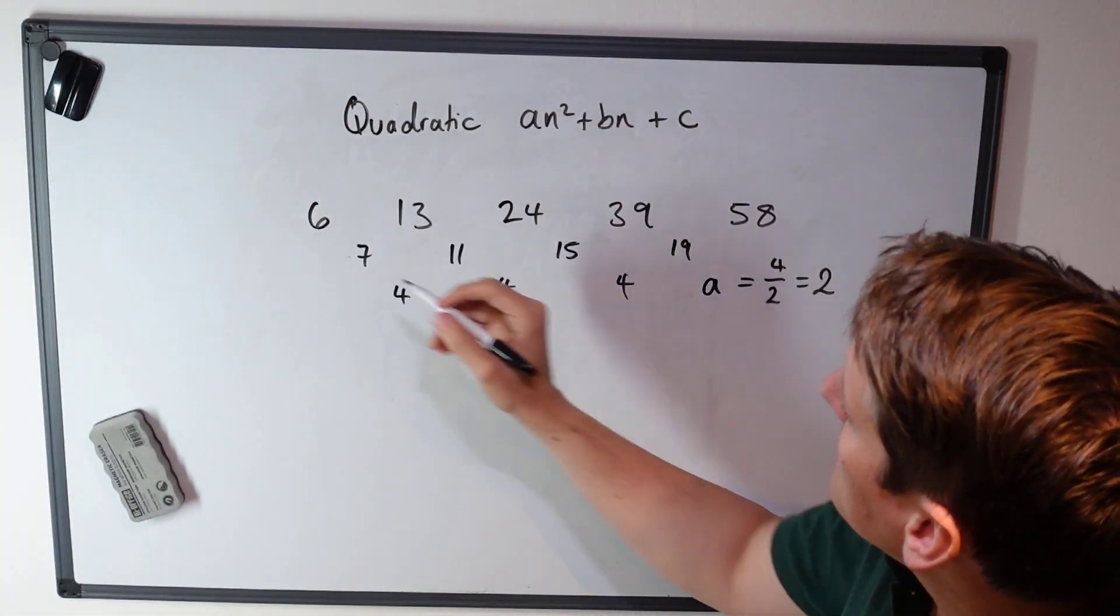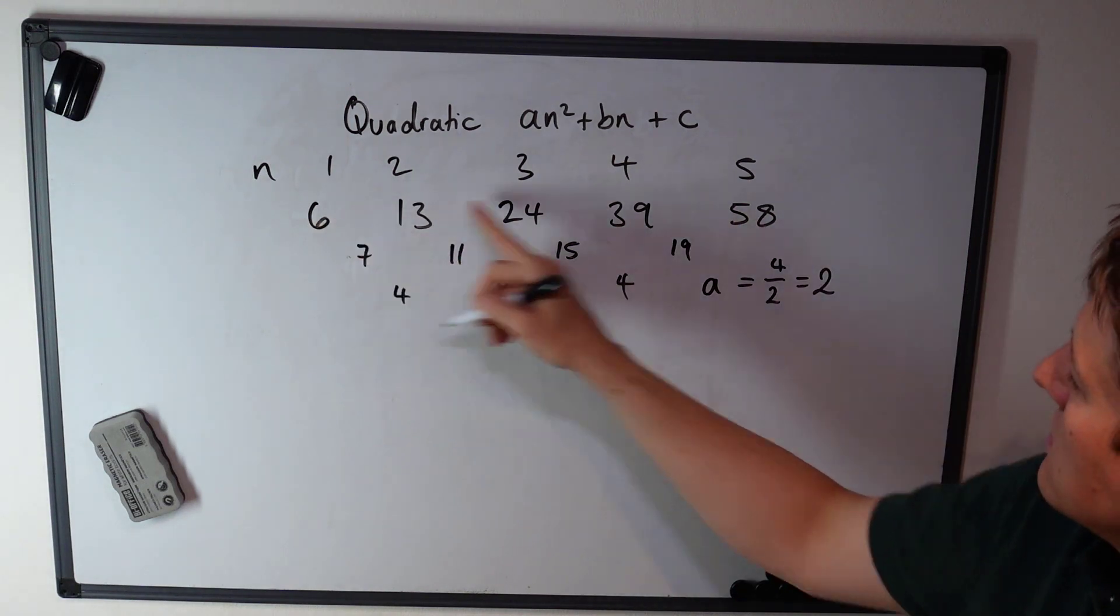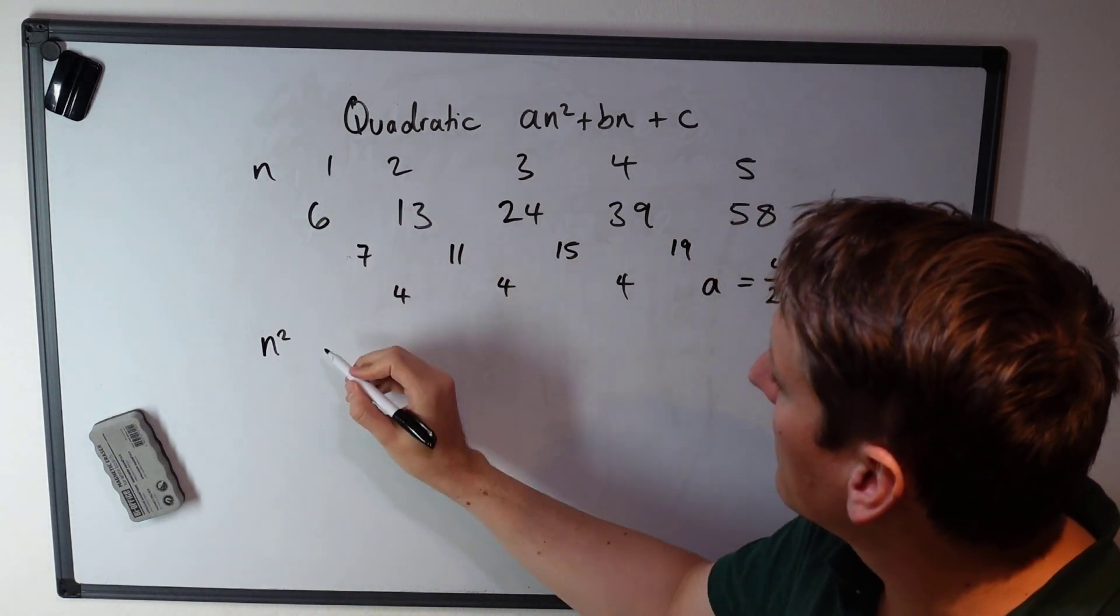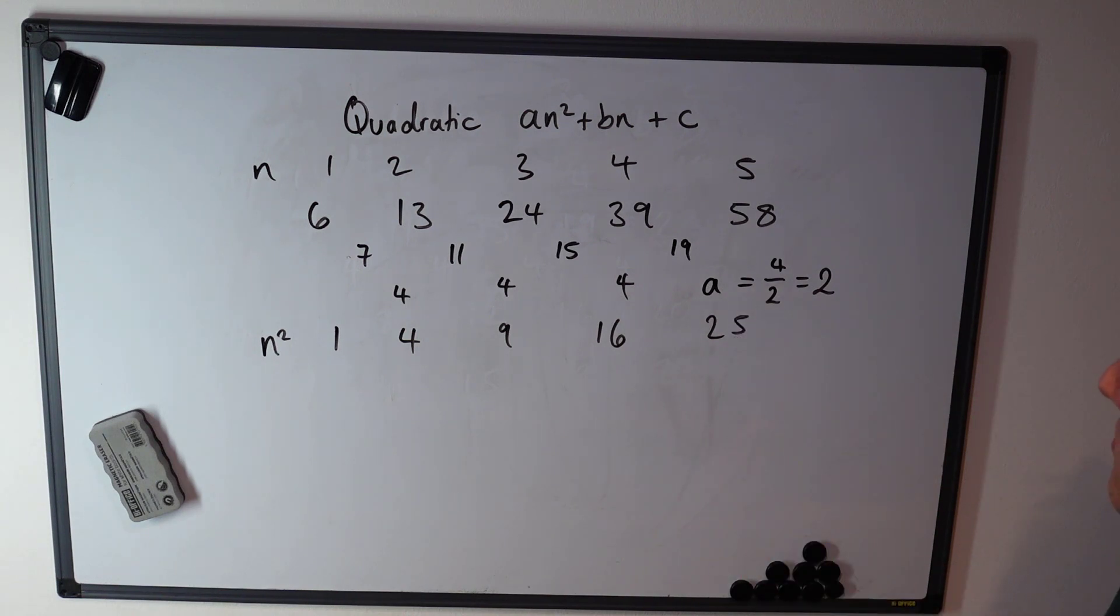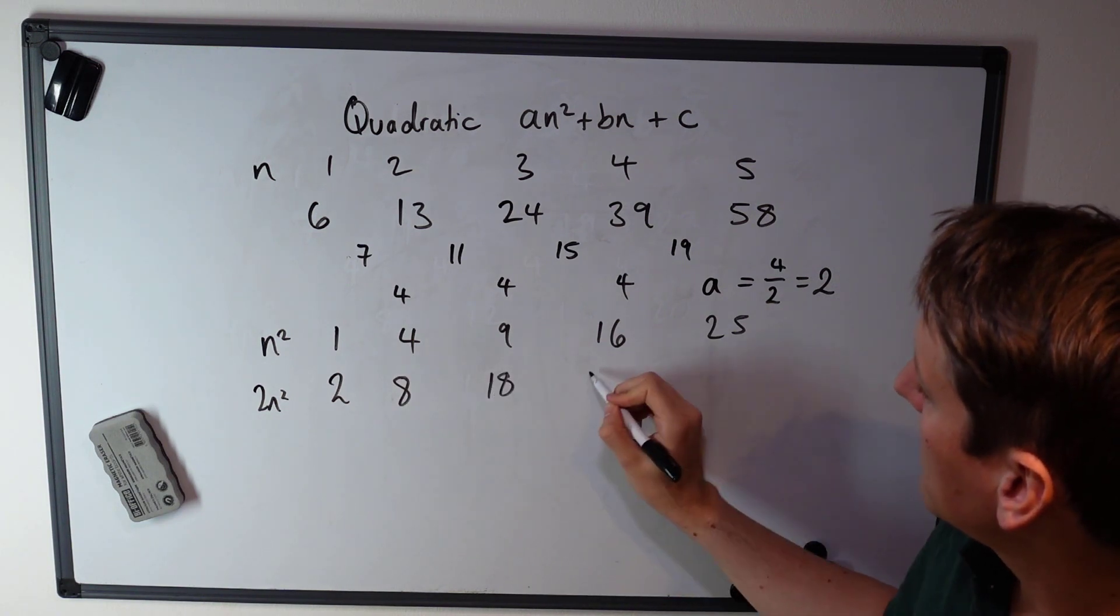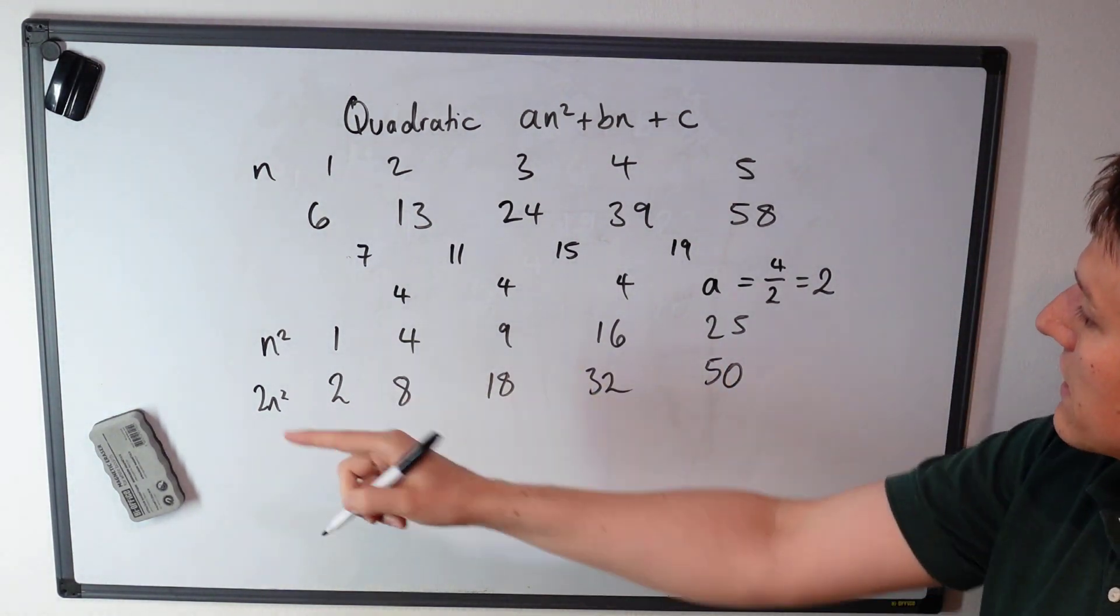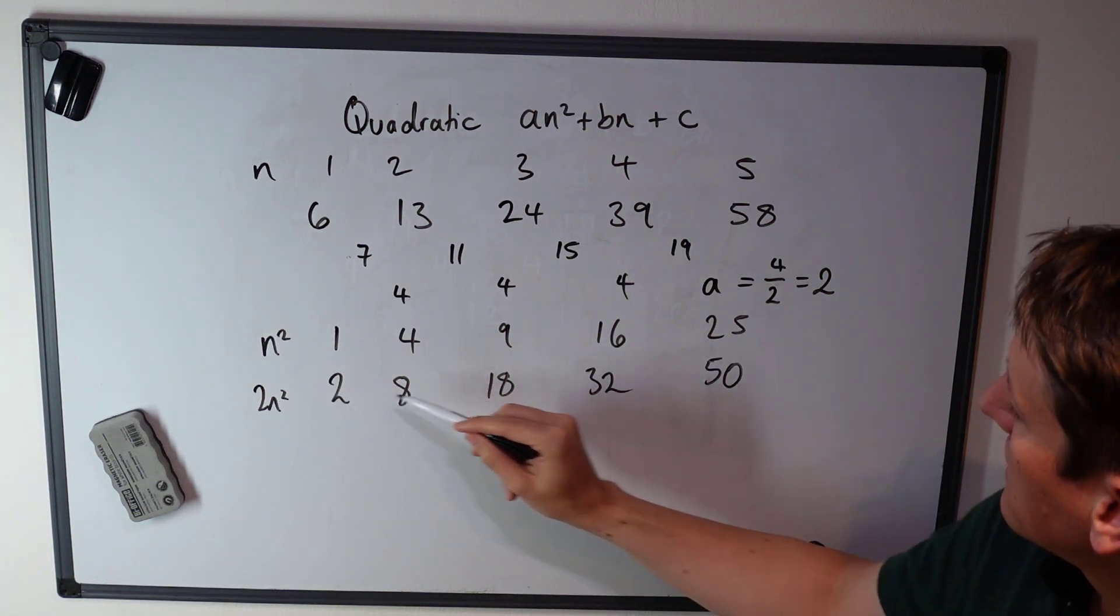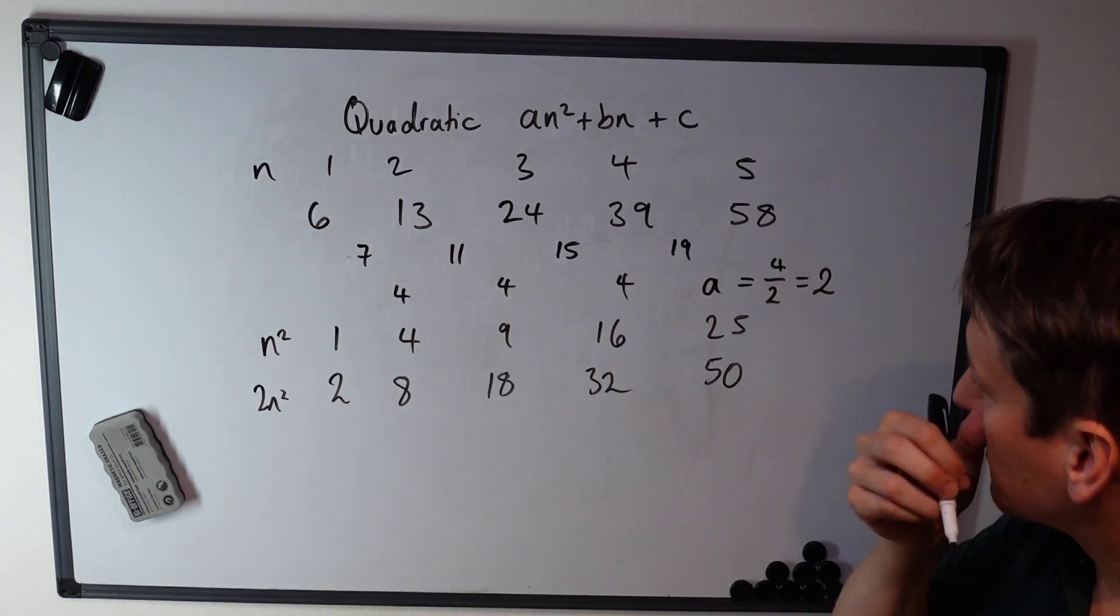So this sequence here, let's add in the term numbers 1, 2, 3, 4, and 5. This sequence is going to be related to the sequence 2n². Let's write down n squared: that's 1, 4, 9, 16, and 25. And 2n² is 2, 8, 18, 32, and 50, just doubling the sequence n². Now the question is, what else do I need to add on to the 2n² to get this original sequence?